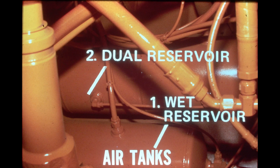From the wet reservoir, compressed air enters the dual chamber reservoir located directly above the wet reservoir. The right chamber supplies air for the rear brakes, and the left chamber supplies air for the front brakes. Located in the lines which connect all the reservoirs are one-way check valves. The check valves prevent air loss from one reservoir to another should a line or reservoir rupture.